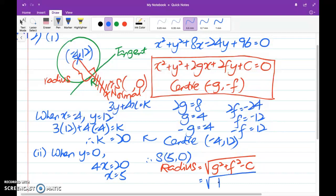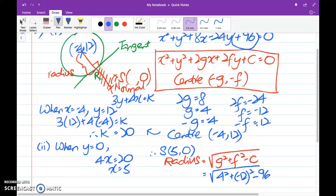We have known what is G. It is 4. We have known what is F. It is negative 12 square minus what is C. Now C is basically this constant here. Let me just circle it for you. It is positive 96. Use your calculator. You work it out to get 8 units. So the radius is basically 8 units.